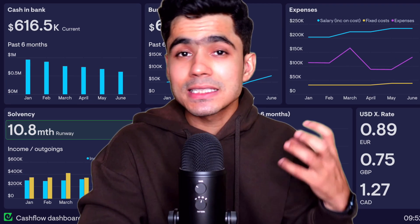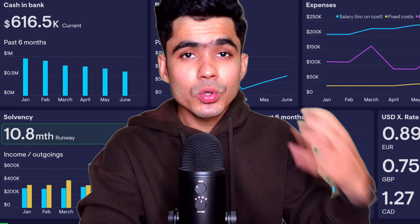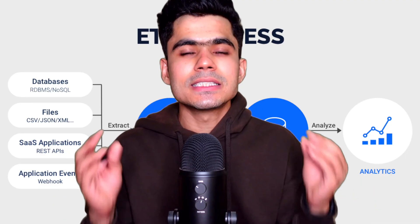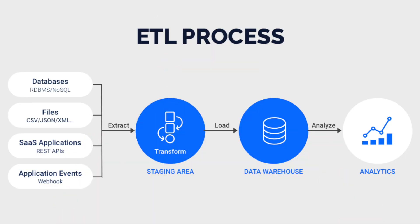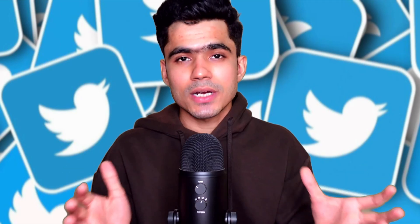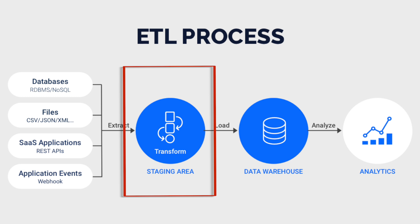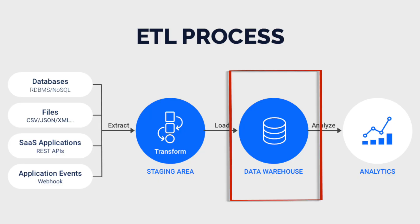Once we have our transformation job written, we can analyze this data and think about how to load it onto a target location. Everything we are doing is called ETL — Extract, Transform, Load. We extract data from multiple sources, in this case the Twitter API, write some transformation job to convert raw data into a more readable format, and then load our data onto some target location such as a data warehouse or object storage.